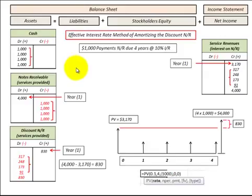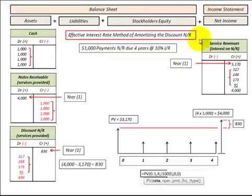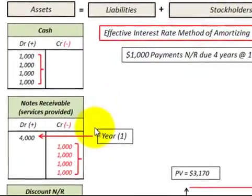Now I'm going to show you how to record the journal entries on this notes receivable with a discount. I have them laid out here with the balance sheet items and the income statement items. Let's look at this notes receivable.